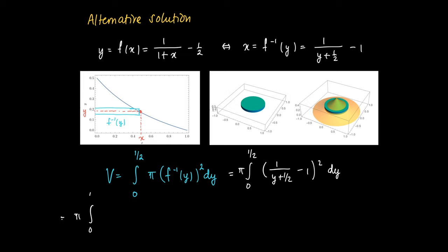Just substitute for the value f inverse of y, and we get the following. Then we simplify the squared term and find that this equals pi times the integral from 0 to 1/2 of 1 over (y plus 1/2) squared minus 2 over (y plus 1/2) plus 1, and these pieces are easy to calculate the primitive.